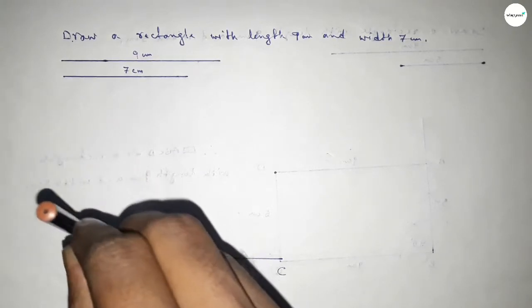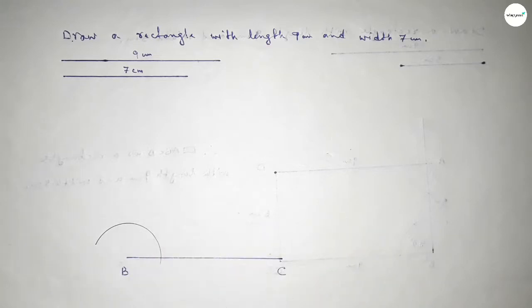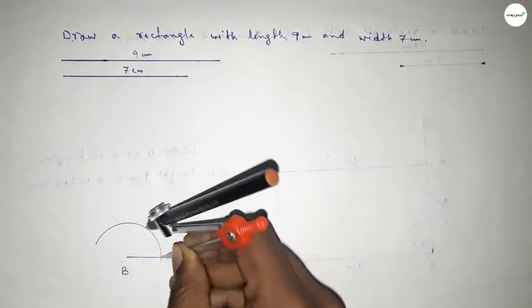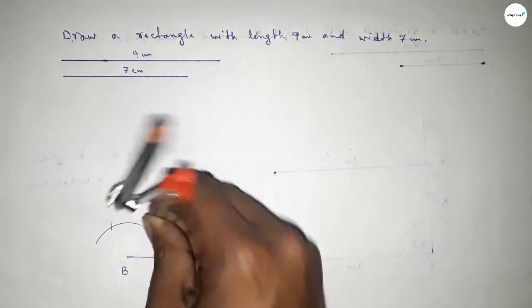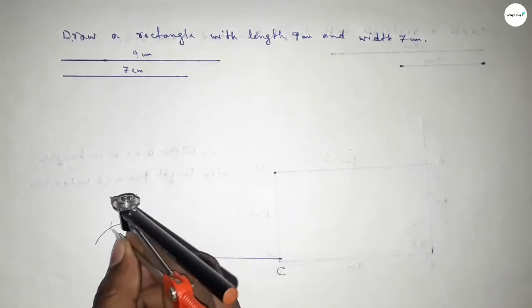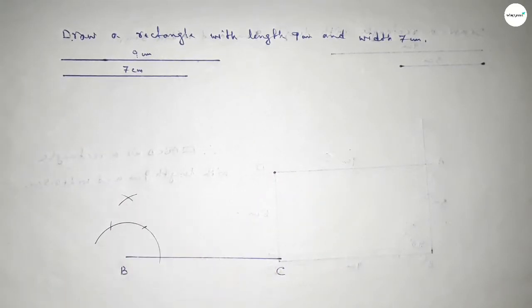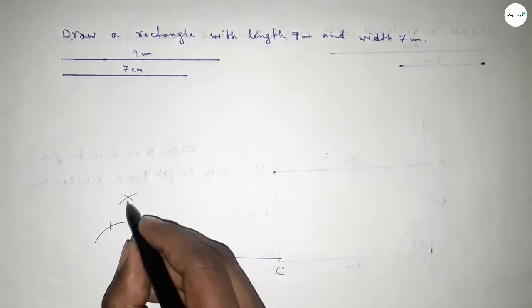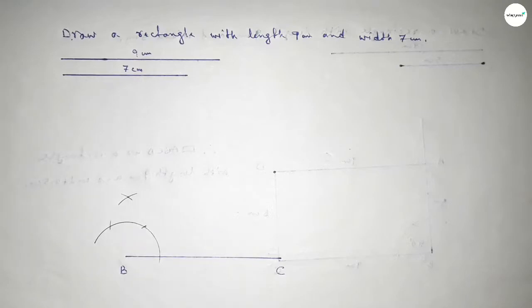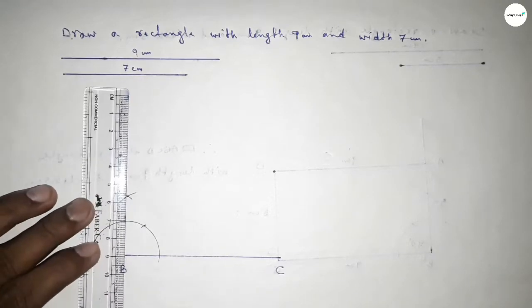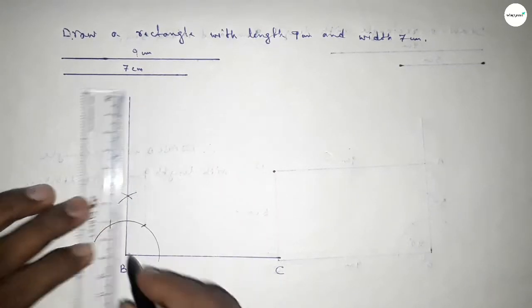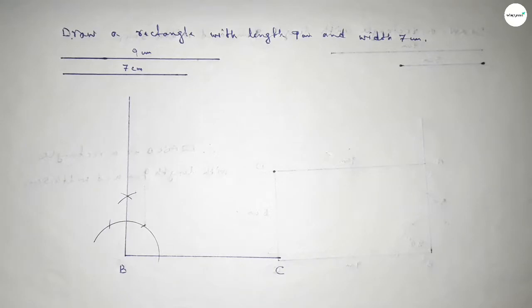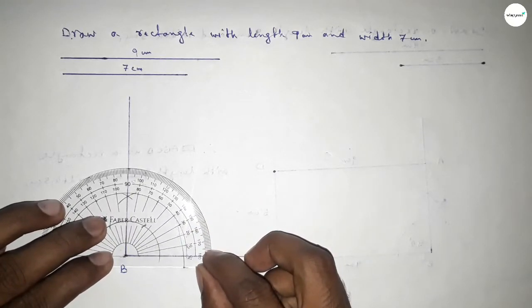Putting the compass on point B and drawing an arc, then putting the compass at the new position and cutting arcs at the intersections. Both curves intersect at a point, and joining this side gives the 90 degree angle.